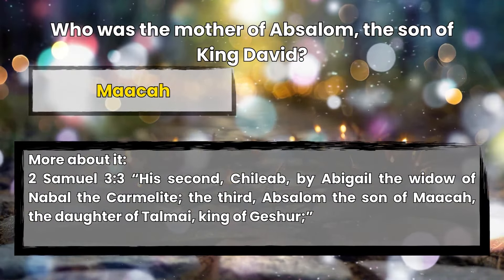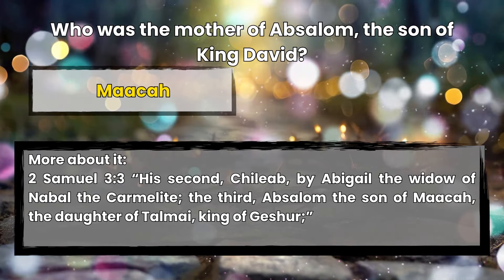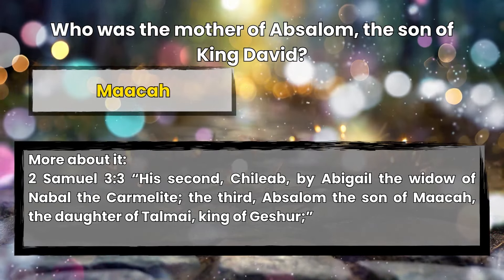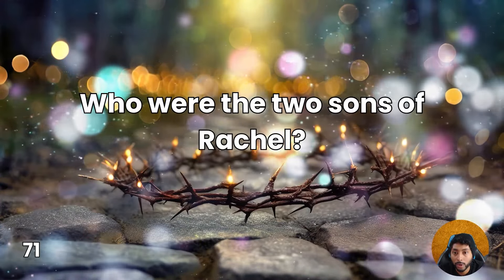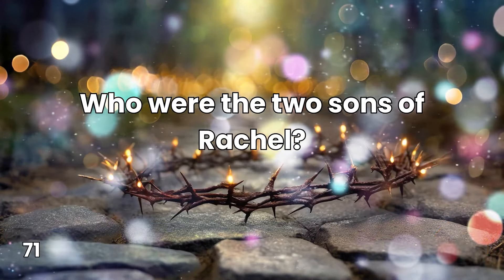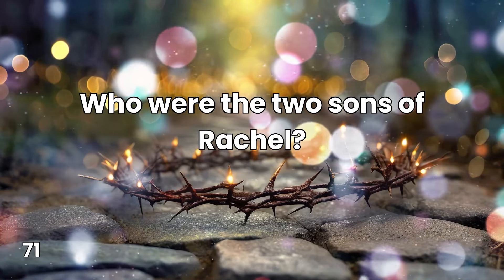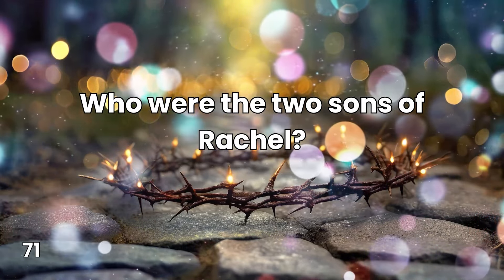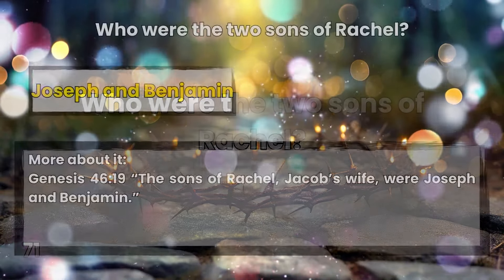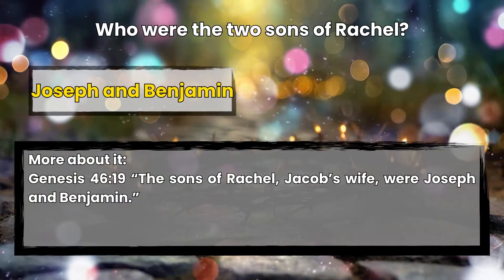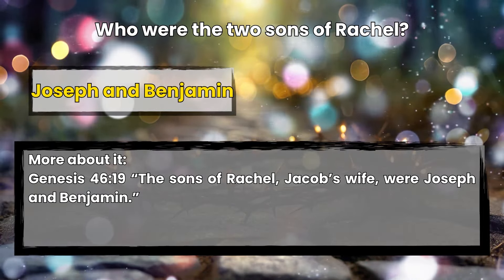Question 70: Who were the two sons of Rachel? The sons of Jacob's wife Rachel were Joseph and Benjamin.